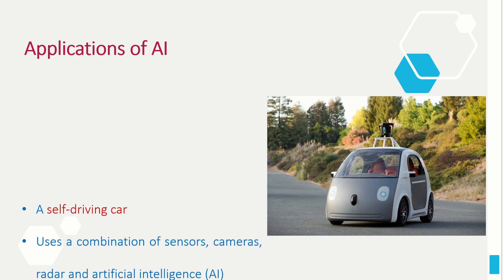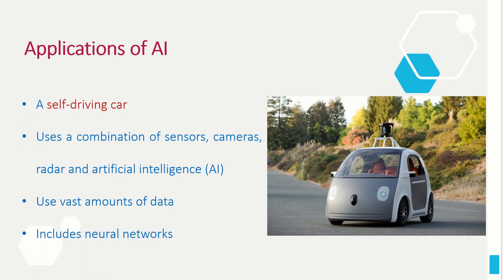A self-driving car, also called an autonomous car or a driverless car, is a vehicle that uses a combination of sensors, cameras, radar, and artificial intelligence to travel between destinations without a human operator's intervention. The data includes images from cameras on self-driving cars, from which a neural network learns to identify traffic lights, trees, curbs, pedestrians, street signs, and other parts of any driving environment.